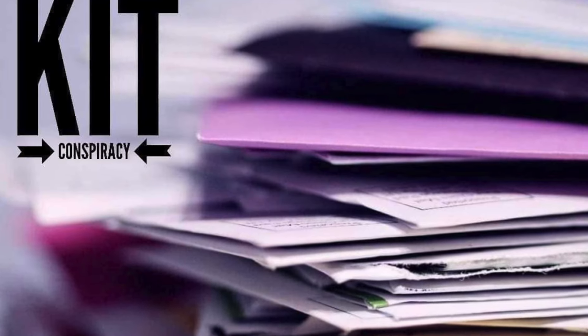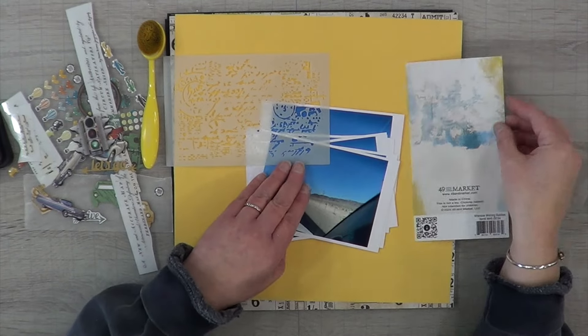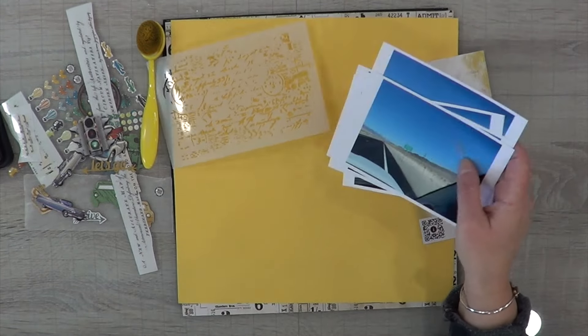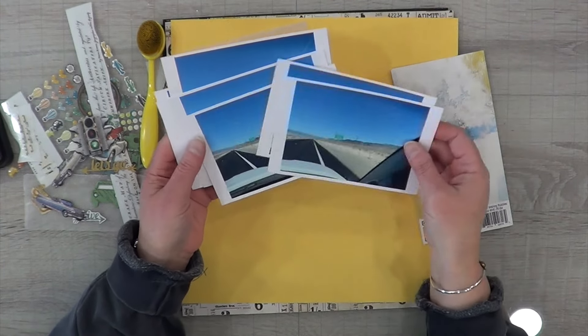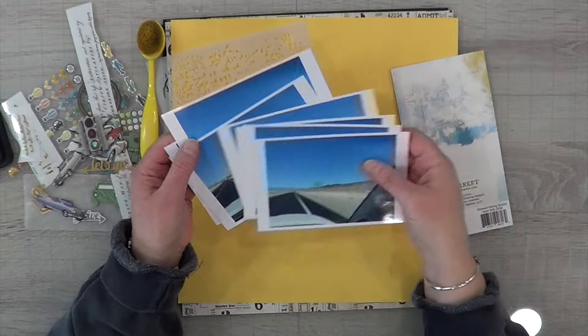Hey it's MK and welcome to week two of Kit Conspiracy. This is the page kit that I have put together for my Wherever collection by 49 and Market. I have nine photos - actually I think I counted them twice because I can't believe I have nine photos.